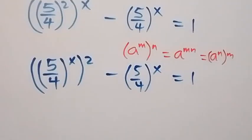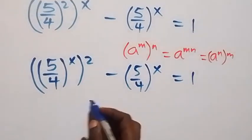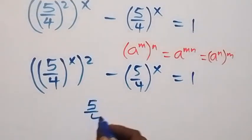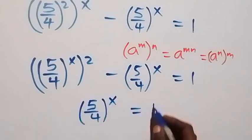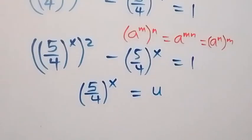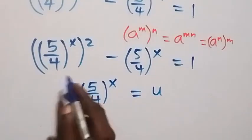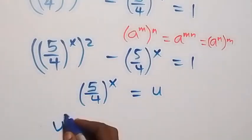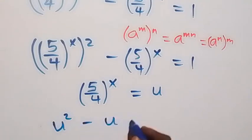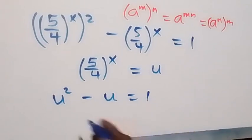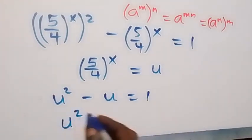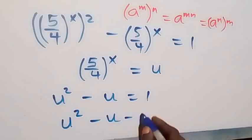Then from here, we can let a letter represent (5/4) raised to power x. So we let (5/4) raised to power x equal u. From here, this becomes u squared minus u equals 1, which we can rearrange, giving u squared minus u minus 1 equals 0.